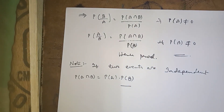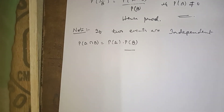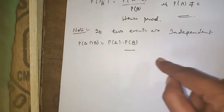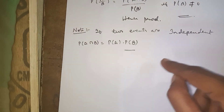Note: If A and B are independent events, then P(A ∩ B) = P(A) · P(B). That's enough for today, thank you.